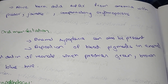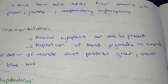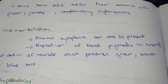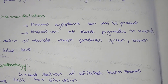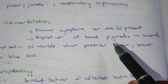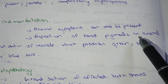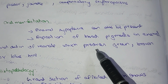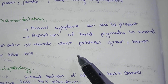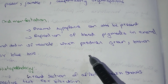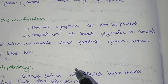Affected infants suffer from anemia with pallor, jaundice, and compensatory erythropoiesis. Oral manifestations include enamel hypoplasia. There is also deposition of blood pigments in enamel and dentin in neonatal teeth, which produces green, brown, or blue discoloration.